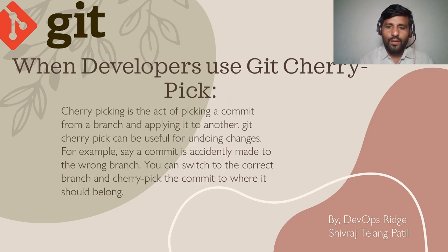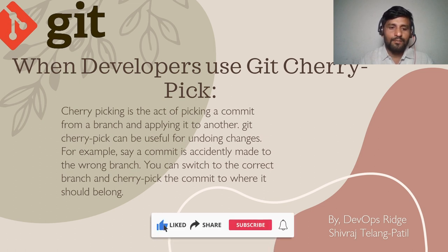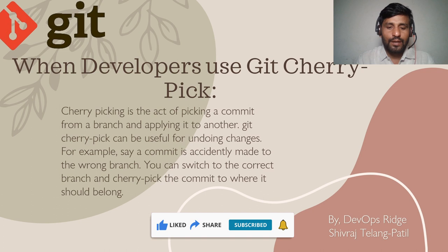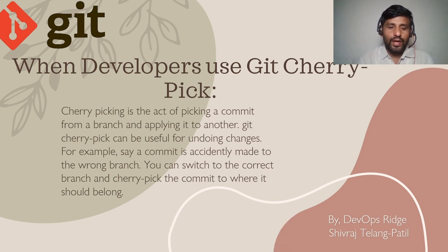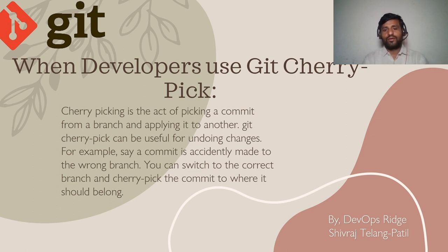When do developers use git cherry pick? Cherry picking is the act of picking a commit from a branch and applying it to another. Git cherry pick can be useful for undoing changes. For example, say a commit is accidentally made to the wrong branch — you can switch to the correct branch and cherry pick the commit to where it should belong. If a developer mistakenly committed into another branch, suppose the feature branch, but wanted to commit it in the main branch, we can use git cherry pick in this case.